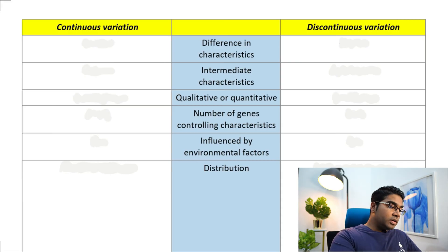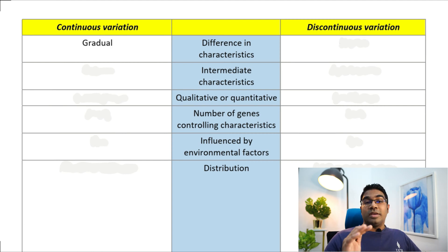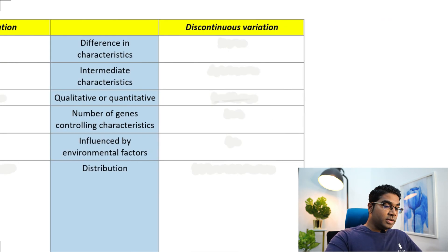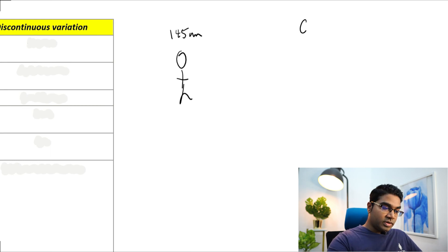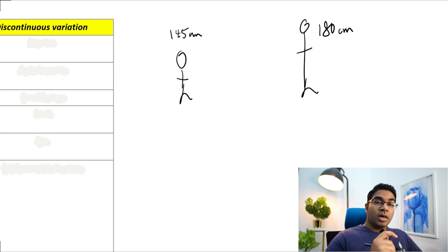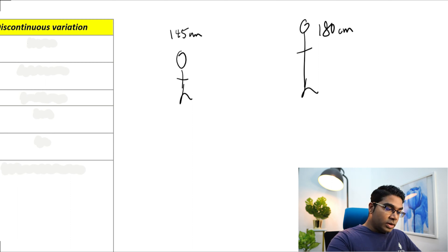Let's look at the difference between continuous and discontinuous variation. In continuous variation, the difference in characteristics is gradual. What do we mean by this? Take height, for instance. If you have someone who is 145 centimeters tall and then you have another person who is 180 centimeters tall, there are still any number of heights between 145 and 180.